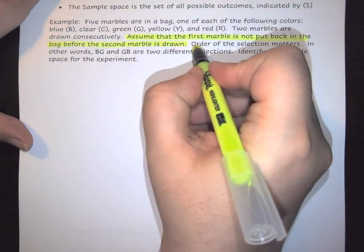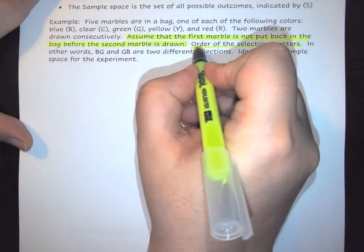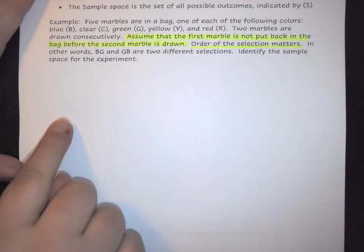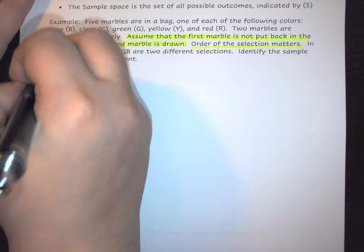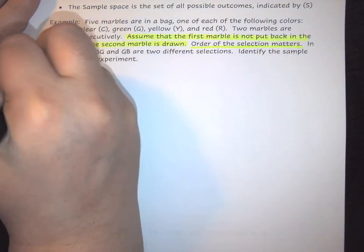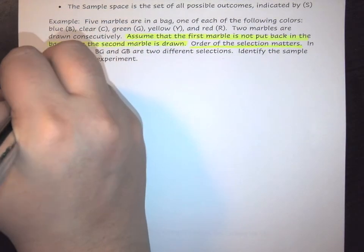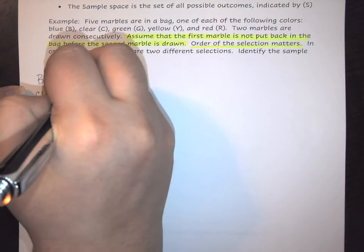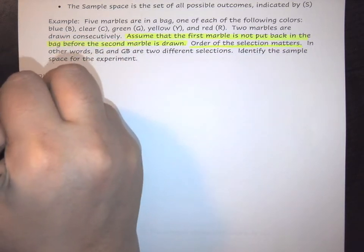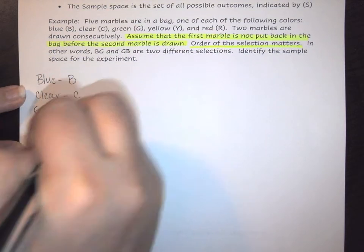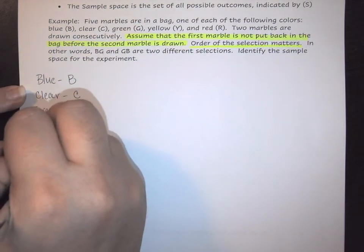The important piece here is that order is important. To create the sample space, I like to write out my list of samples on the side: blue (B), clear (C), green (G), yellow (Y), and red (R).